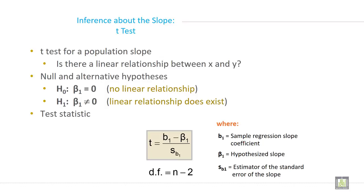So test statistic is T equals B1 minus beta 1 divided by SB1, where degree of freedom is n minus 2, and B1 is the sample regression slope coefficient. Beta 1 is the hypothesized slope and SB1 is the estimator of the standard error of the slope.